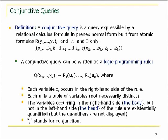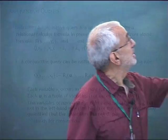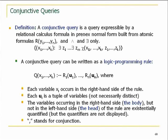There is another way to write conjunctive queries, which will be of interest when we move to Datalog in the second half. We can write them as rules in logic programming. In a logic programming rule, conjunctions are replaced by commas, and existential quantification has disappeared — it is implicitly denoted because variables that occur on the right-hand side but not on the left-hand side are assumed to be existentially quantified. The right-hand side is called the body of the query and the left-hand side is called the head.